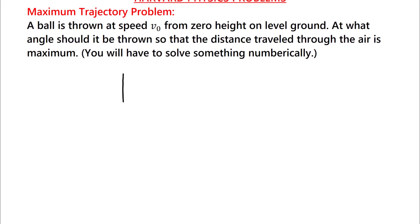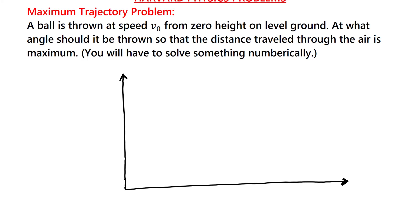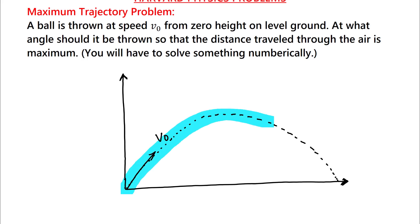We have a ball thrown in the air with velocity V0, following a projectile motion path. We have to find the arc length of this trajectory and also find the angle theta for which this length will be maximum.